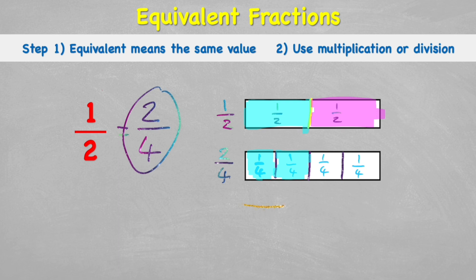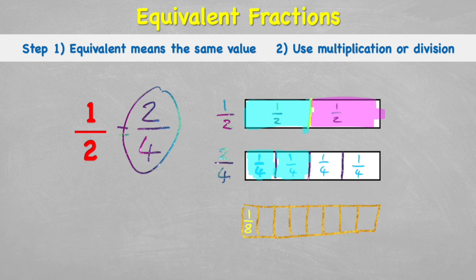We could keep going — I could make another chocolate bar cut into eighths by cutting all of those quarters in half again. Each individual section has a value of one eighth. How many eighths do I need to get to my half? I need one eighth, two eighths, three eighths, and four eighths. So one half equals four eighths.